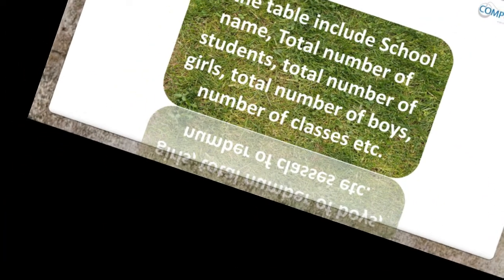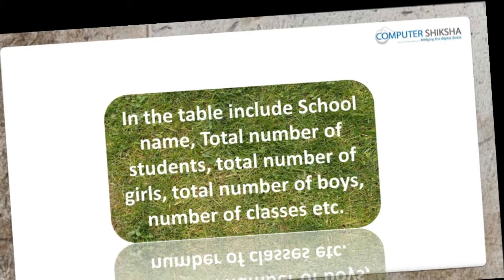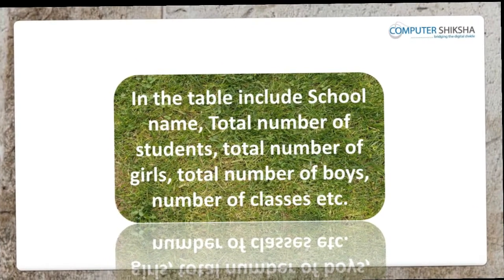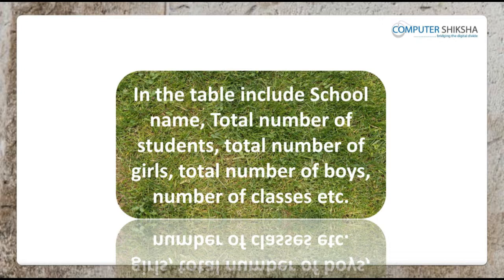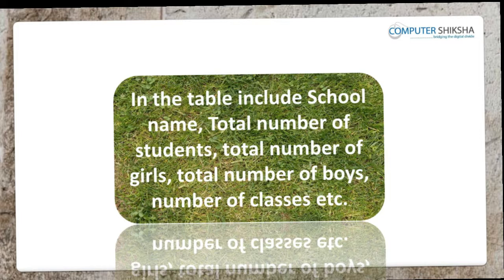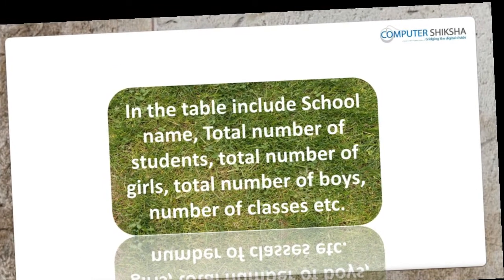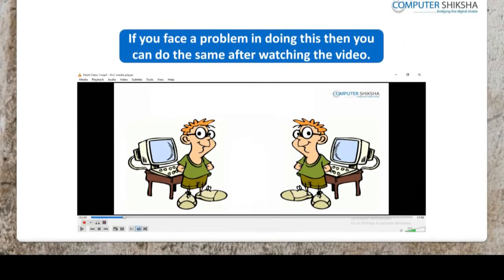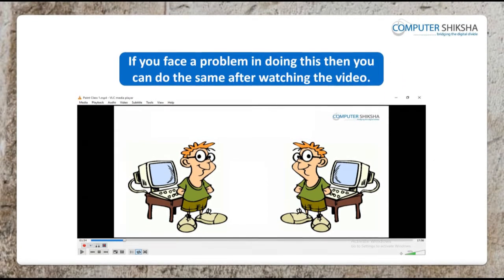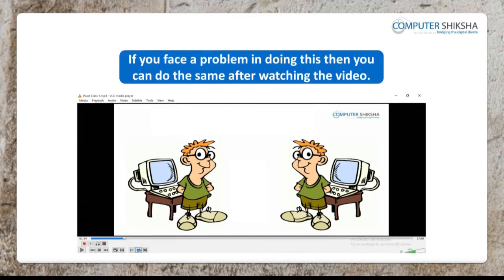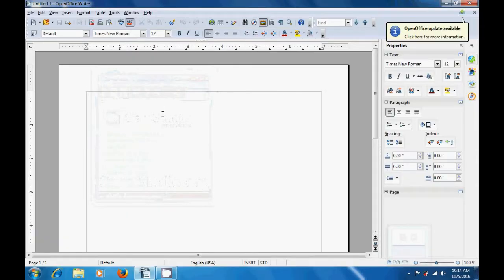In the table, include school name, total number of students, total number of girls, total number of boys, and number of classes. If you like, you can also show the results of the school. If you face a problem in doing this, then you can do the same after watching this video. By watching this video, let us now see how we can create a table using the option in the standard toolbar on our writer page.